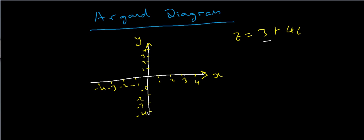And also my imaginary part is 4. So I go along 1, 2, 3 and up 1, 2, 3, 4. So if I put a cross here, that is the complex number z equals 3 plus 4i. And that's all there is to it.